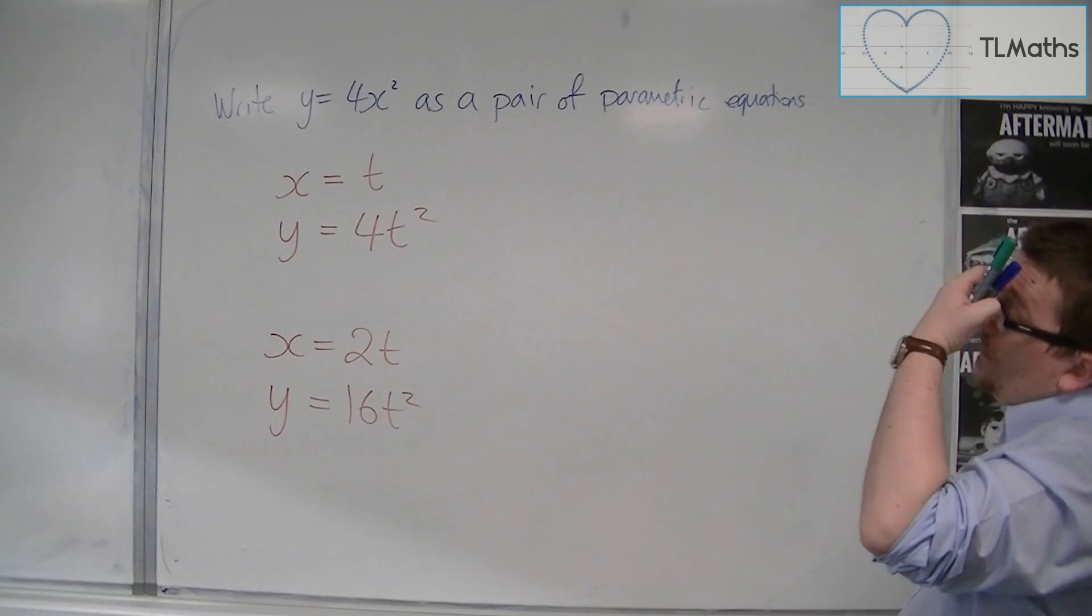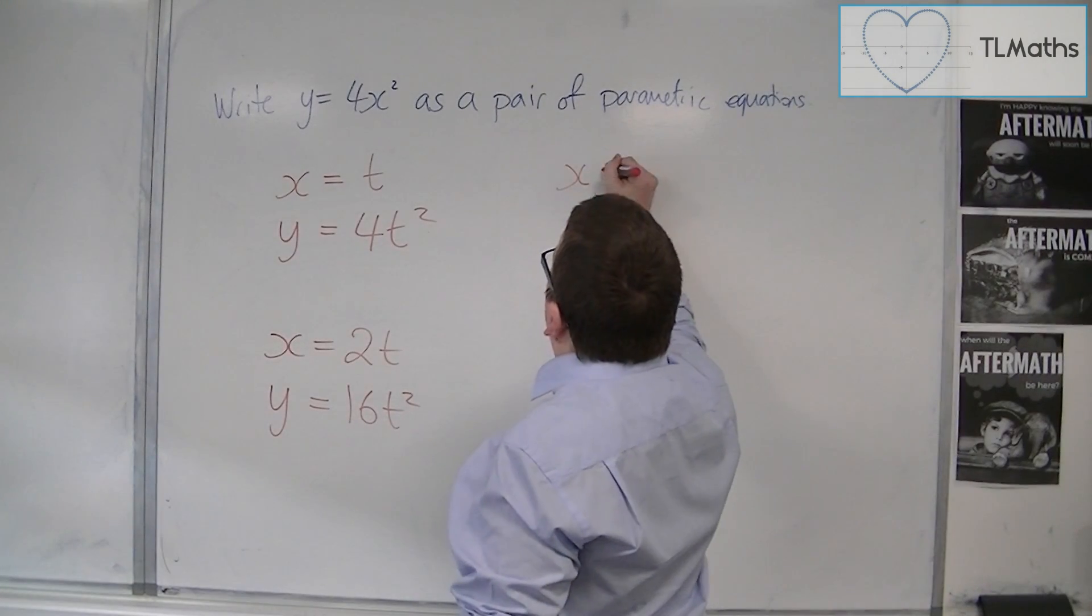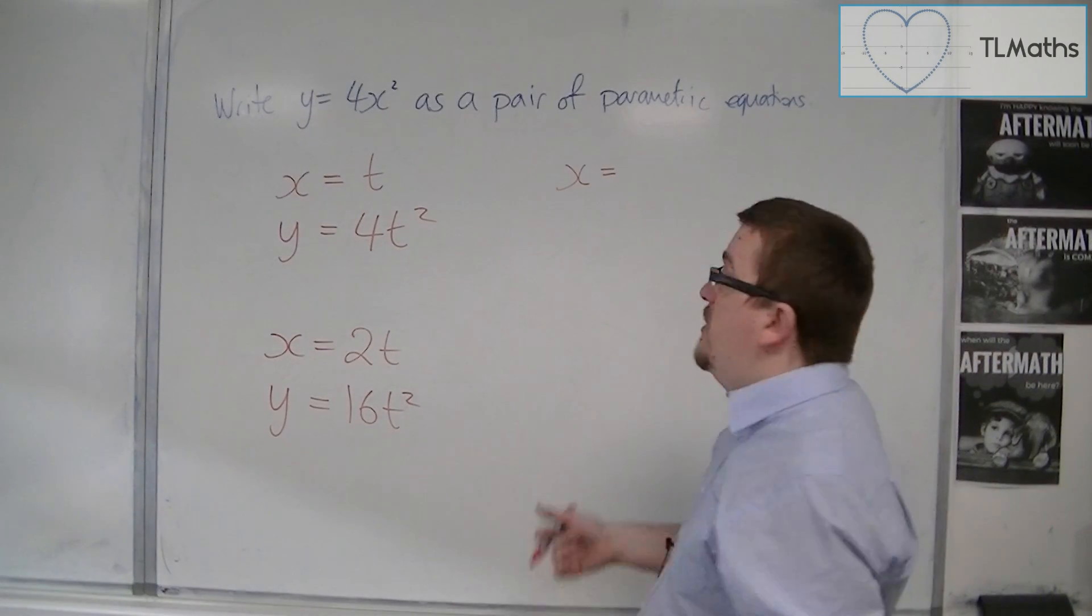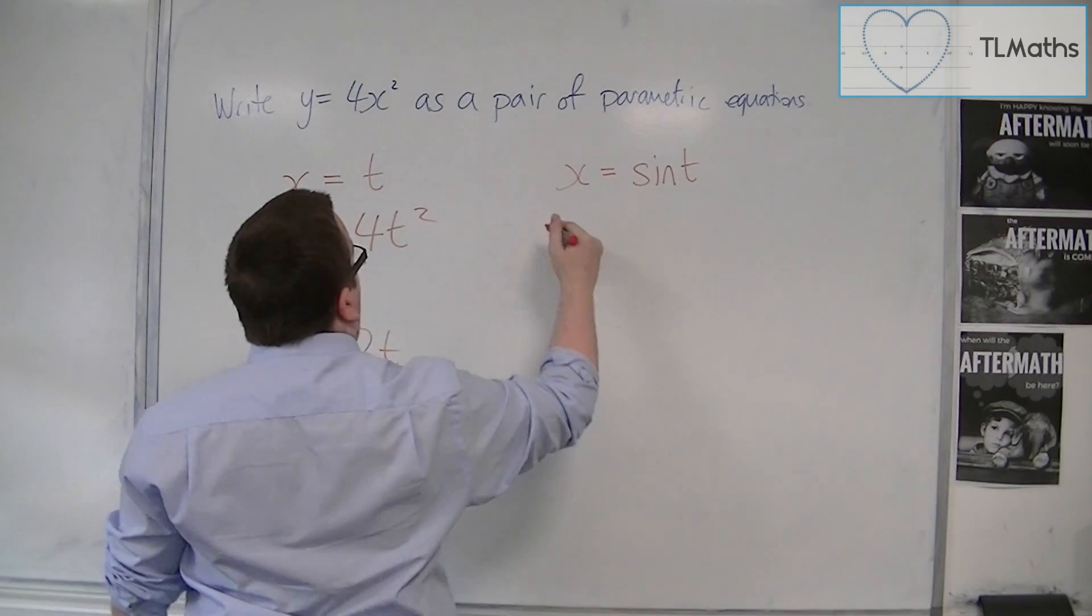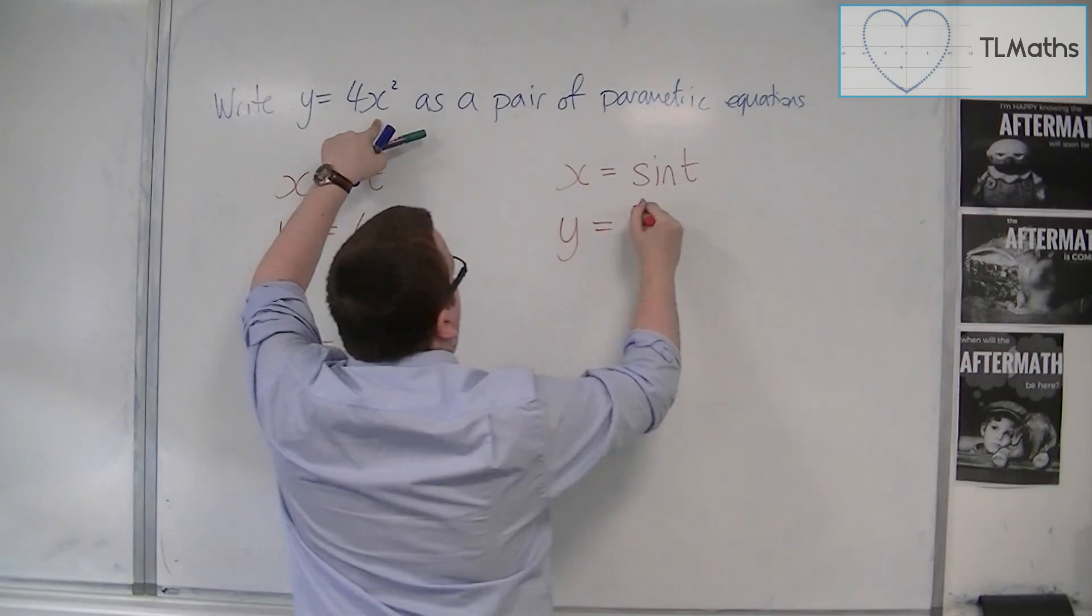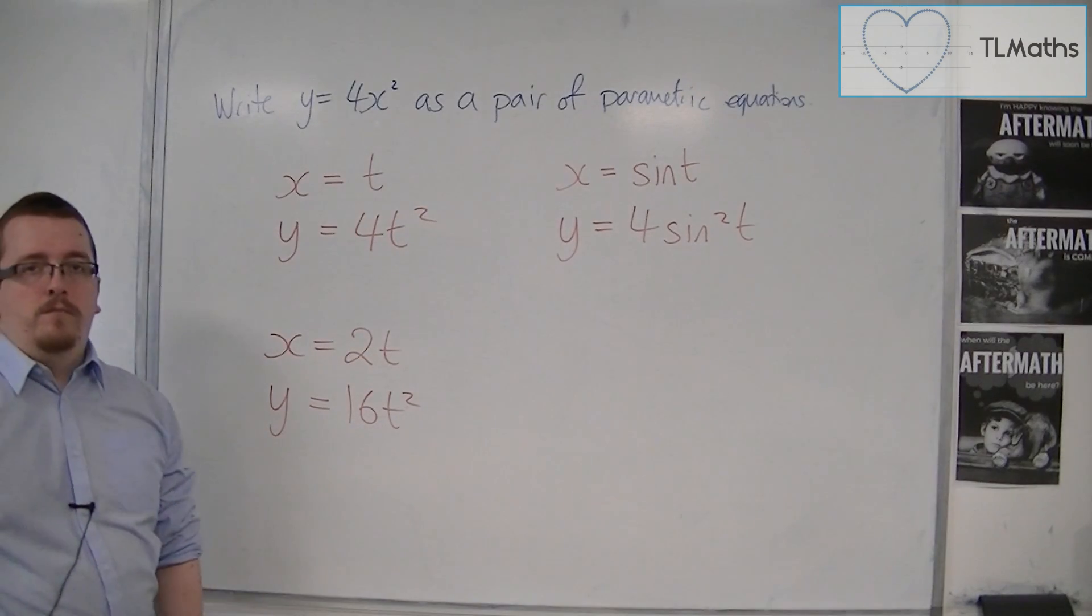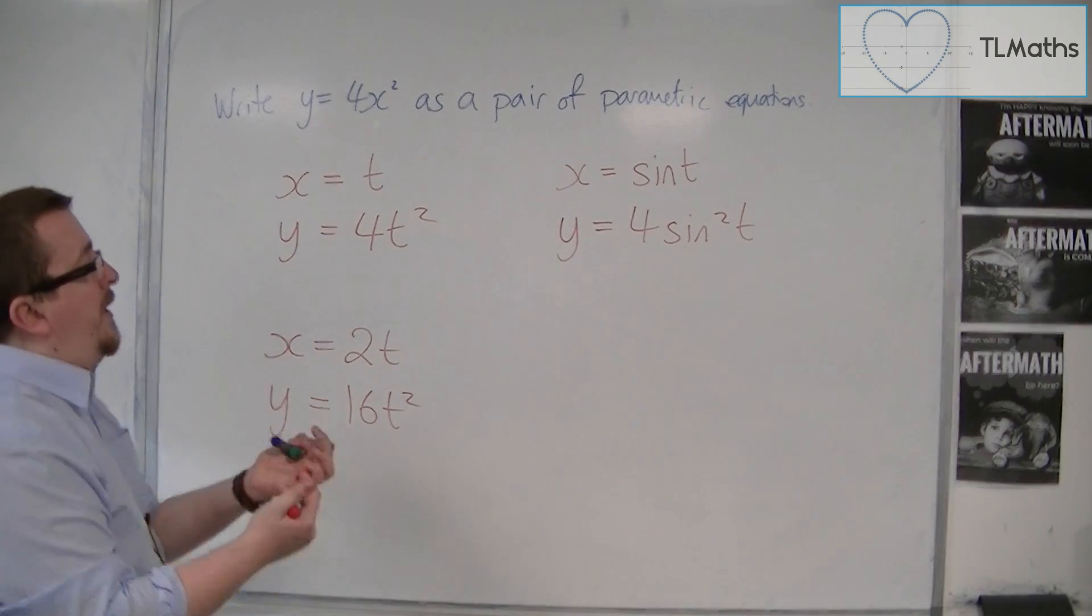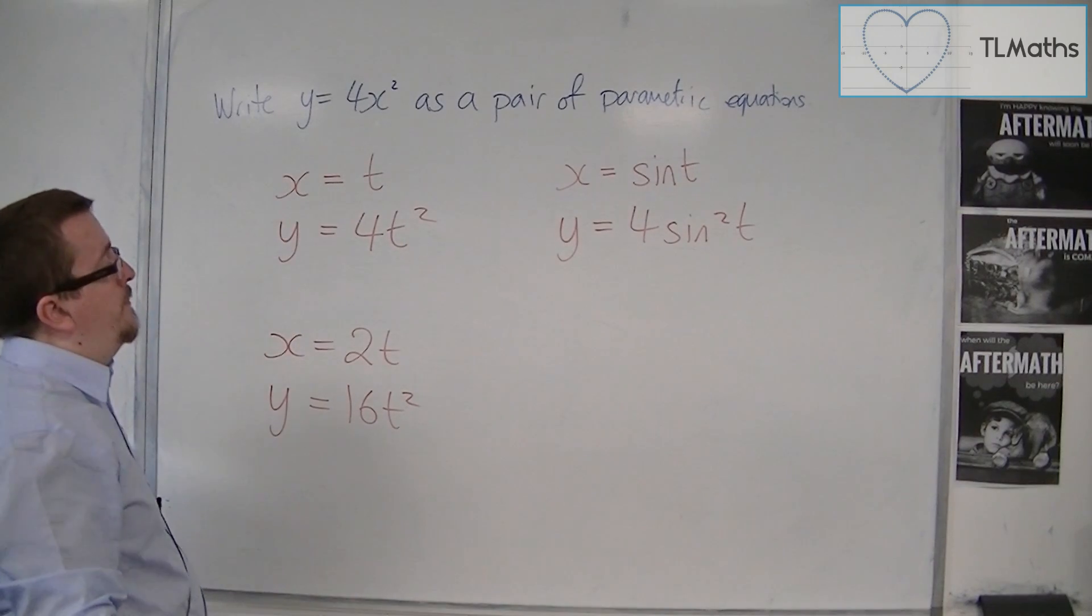So what else could you do? You could write x equals sin t, and then y would be equal to 4 lots of sin squared t. So all I've done in each of these cases is write x as some function of t, and then I can immediately write what y would be as a function of t.